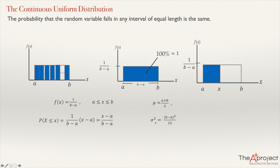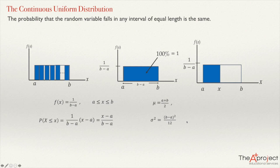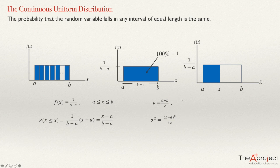We also have a formula for the variance: sigma squared equals B minus A squared divided by 12. In the red light case, that's two squared, which is four, divided by 12 — so one-third of a minute is the variance for the waiting time at a red light. That concludes the introduction to the continuous uniform distribution. More videos with problems and proofs of these two formulas will appear on this website.